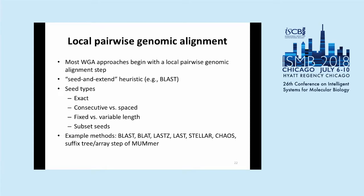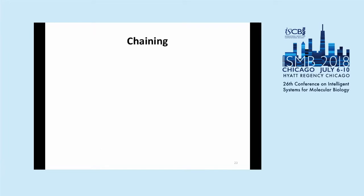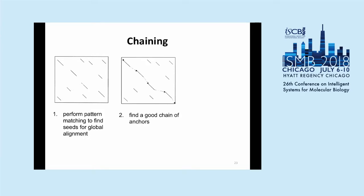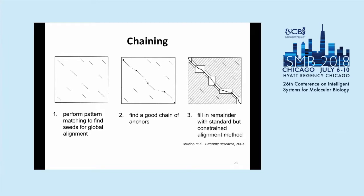Methods vary in the types of seeds used — exact seeds, seeds matching only at certain positions — and seed length can vary. Seeds can be in nucleotide sequence or translated amino acid sequence depending on how divergent the sequences are. A second step common to most methods is chaining: after initial local alignment, a chain of collinear and consistent pairwise alignments is found, and then a variant of the Needleman-Wunsch global alignment is performed between adjacent local alignments to fill in the gaps.